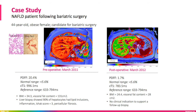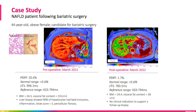This case study is a 44-year-old obese female candidate for bariatric surgery. On the left, you have her liver pre-surgery — very red with a high fat percentage and severe fibroinflammatory activity. A liver biopsy was done to confirm the MRI findings and showed severe fat and mild liver fibrosis. On the right, you can see her liver one year later in green with normal fat percentage and no evidence of fibroinflammatory activity. With Liver Multi-Scan and the metrics included, there was no clinical indication to support a follow-up liver biopsy.